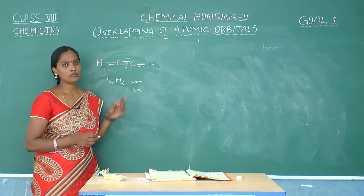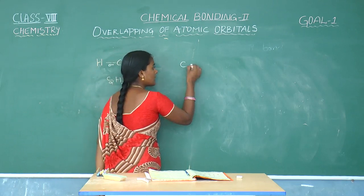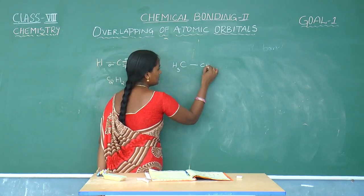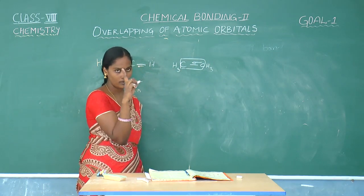Now we have understood the formation. Let us suppose we take carbon-carbon single bond, here CH3, here CH3. For this single bond, we can say only one sigma bond will exist.